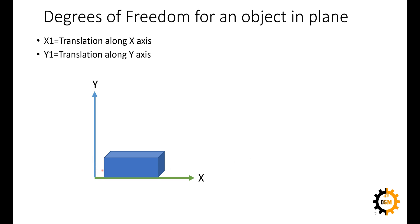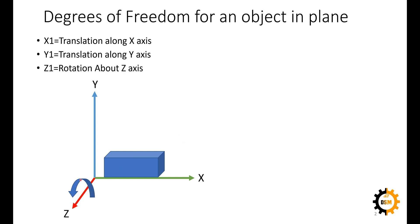The duster can also move along the y-axis, and this will be its second degree of freedom. So these are 2 degrees of freedom. The third axis is the z-axis, but we cannot move this duster in the z-axis because it would detach from the whiteboard and not be able to wipe it. While keeping the duster against the whiteboard, we can rotate it, and this rotation will be about the z-axis. So the duster can translate along x, translate along y, and rotate about z — these are its first, second, and third degrees of freedom.